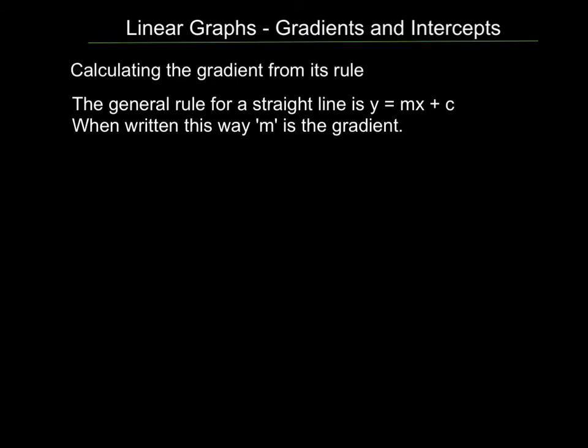We can also calculate the gradient from its rule. It turns out that the M in the rule is the gradient, which is a good reason for writing it that way in the first place. So if I've got y equals 5x plus 2, the gradient is 5. If I've got y equals minus 2x minus 2, the gradient is minus 2. The number that precedes the x, the x coefficient, which is where M is, M is the x coefficient, whatever that number is here and here is the gradient. So writing the rule in this way, the y equals mx plus c, is a very good way of finding gradients.